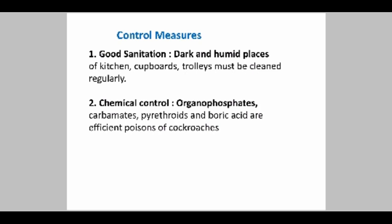For chemical control, organophosphates, carbamates, pyrethroids, and boric acid are effective for controlling or killing cockroaches. These act like a poison on cockroaches, so chemical control is effective. However, sometimes the use of chemicals can be fatal to human life as well, so they should be used carefully in household areas and kept away from children.